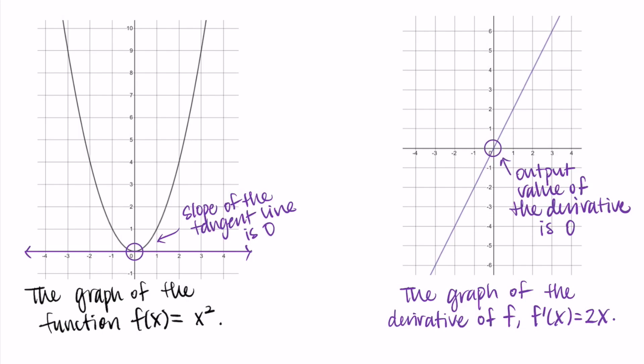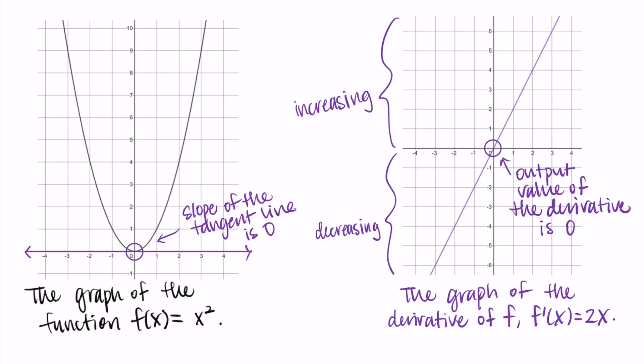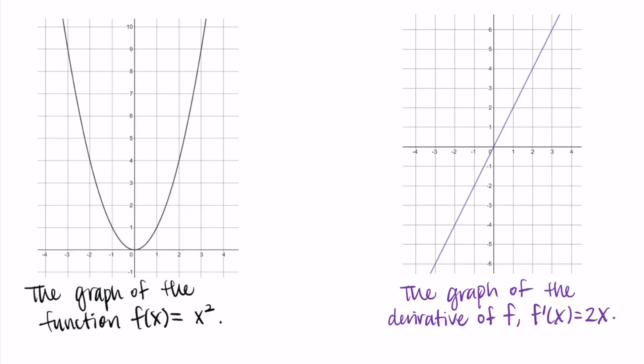At x = 0 on the derivative, the output — which is the slope of the function at that value — is zero. To connect this back to increasing and decreasing one more time: below the x-axis on the derivative means decreasing; above the x-axis means increasing. The output of the derivative is the slope, so the slope is positive above the x-axis when the function is increasing, and negative below the x-axis when the function is decreasing.